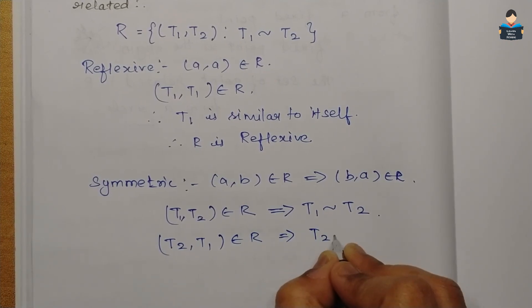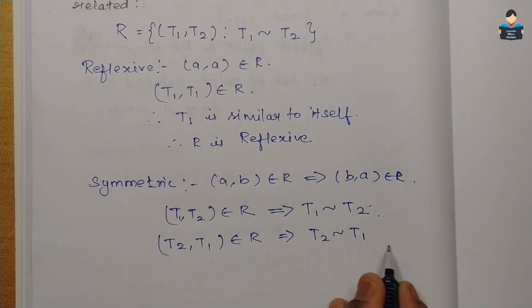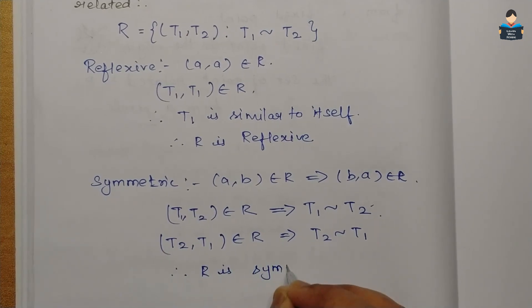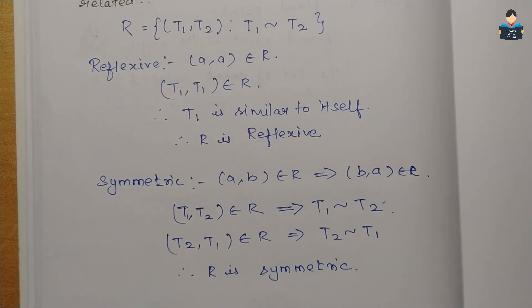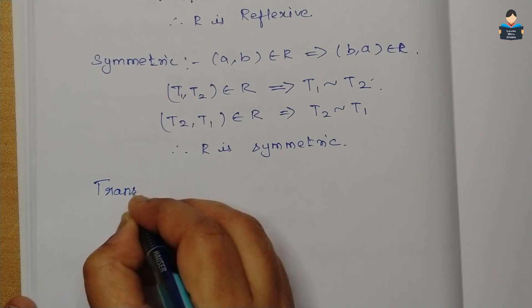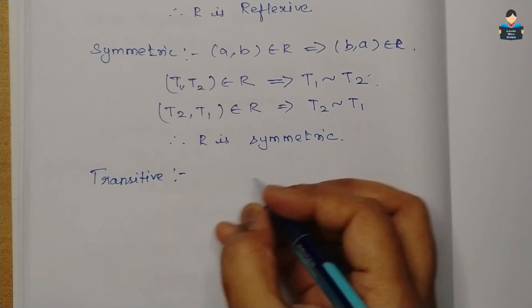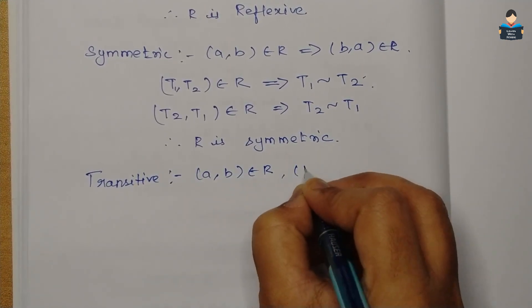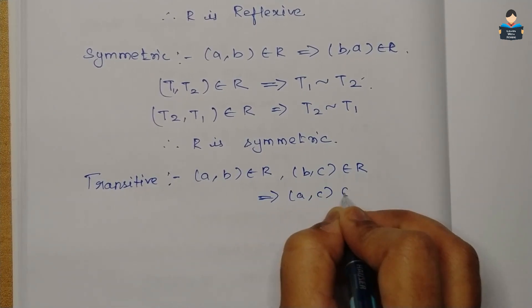So T1 is similar to T2, which means T2 is similar to T1. Therefore (T2, T1) belongs to R. R is symmetric.